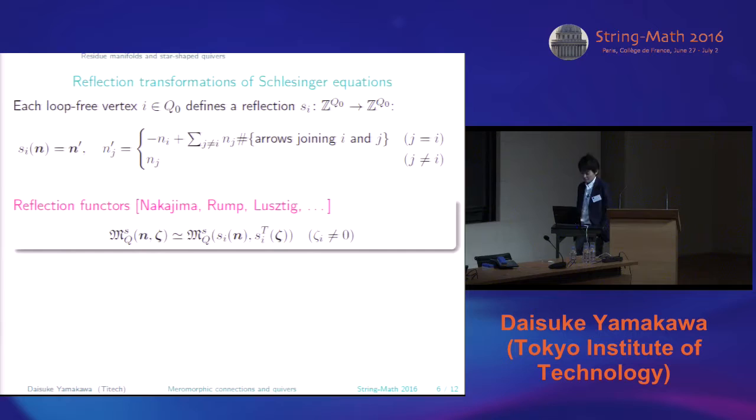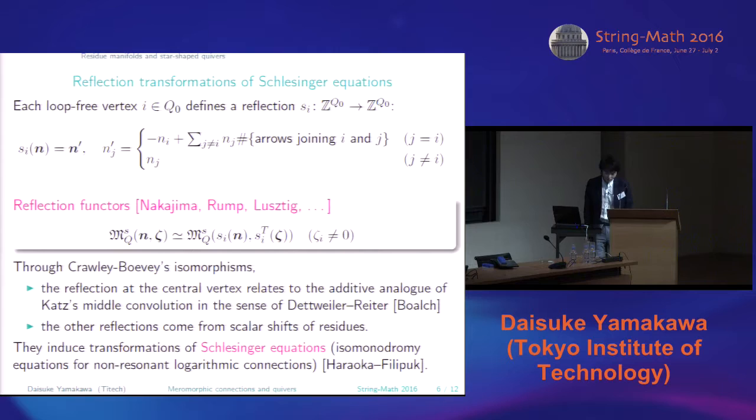So this is called the reflection functor. So through Crawley-Boevey's isomorphism, such reflection at the central vertex of the star-shaped quiver relates to the additive analog of Katz's middle convolution in the sense of Dettweiler and Reiter. So the middle convolution is a certain integral transformation. And the other reflections come from permutations of residues. So they are trivial transformations.